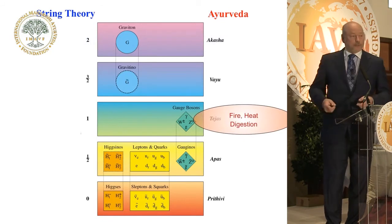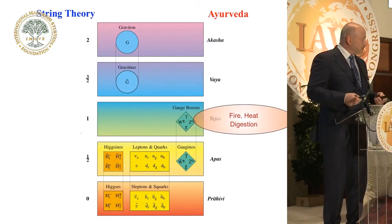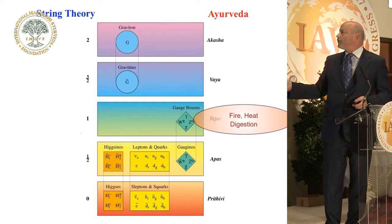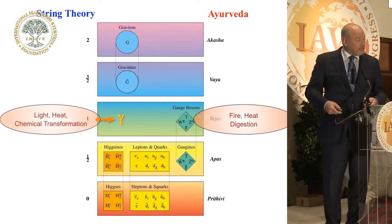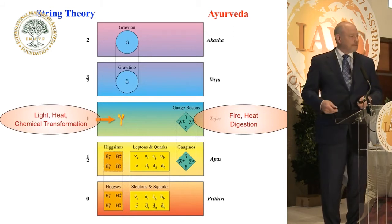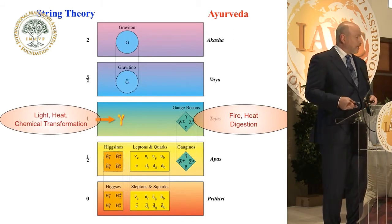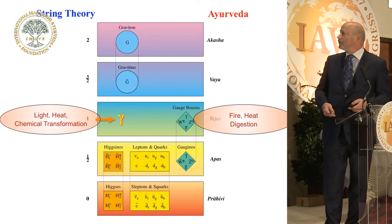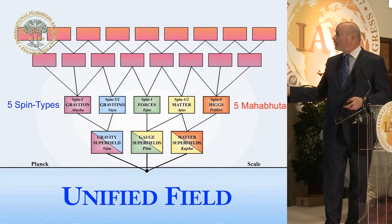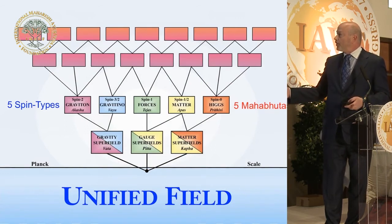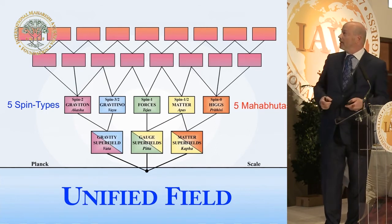Agni, or tegis, means fire, heat, digestion. And the corresponding spin type in string theory is electromagnetism, which is fire, light, heat, chemical structure, and chemical transformation. So we have, really, in this deep structure of creation, an identity of structure described from the standpoint of modern science and the ancient Vedic wisdom and its expression in Ayurvedic medicine.